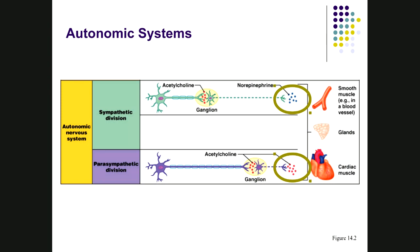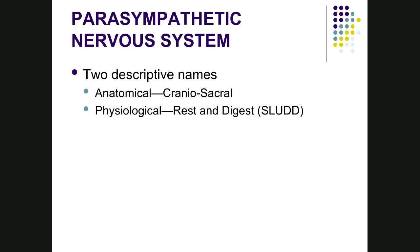The parasympathetic nervous system has two nicknames. The anatomical nickname is craniosacral, describing where these fibers originate. The physiological nickname is rest and digest, describing its function. It is also called the SLUD system — an acronym for salivation, lacrimation, urination, digestion, and defecation — which are the primary functions this part of the nervous system controls.